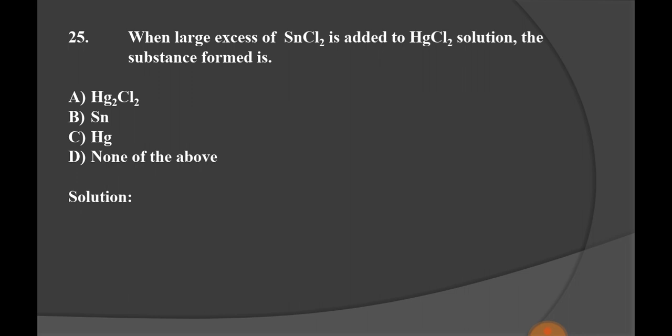When large excess of SnCl2 is added to HgCl2 solution, the substance formed is: Option A Hg2Cl2, Option B HgCl2, Option C Hg, and D none of these. The substance formed in this reaction is Hg2Cl2 and SnCl4. Option A is the right option.